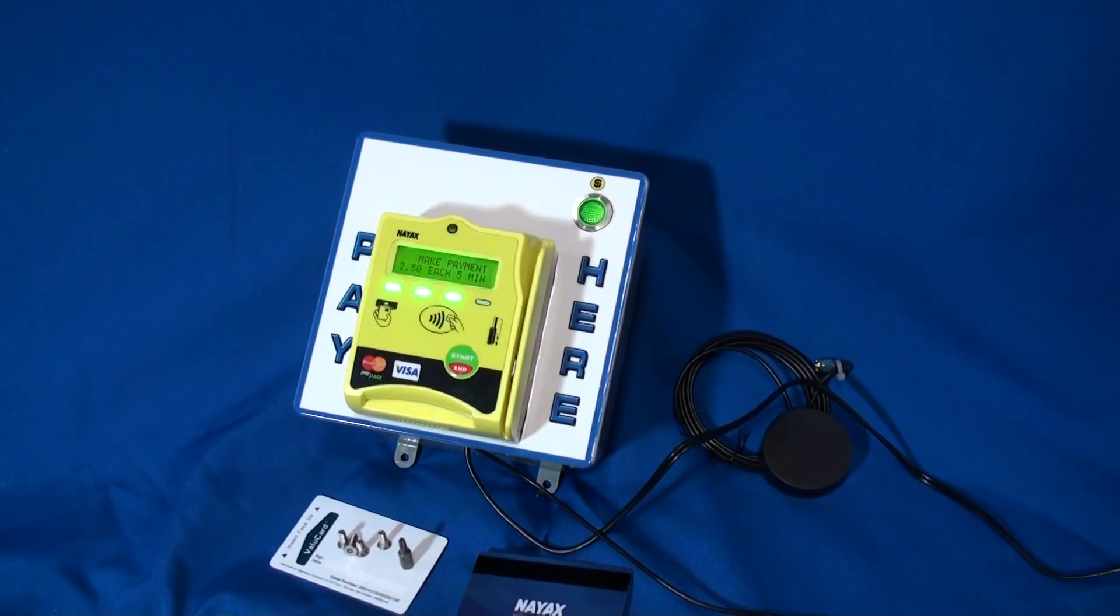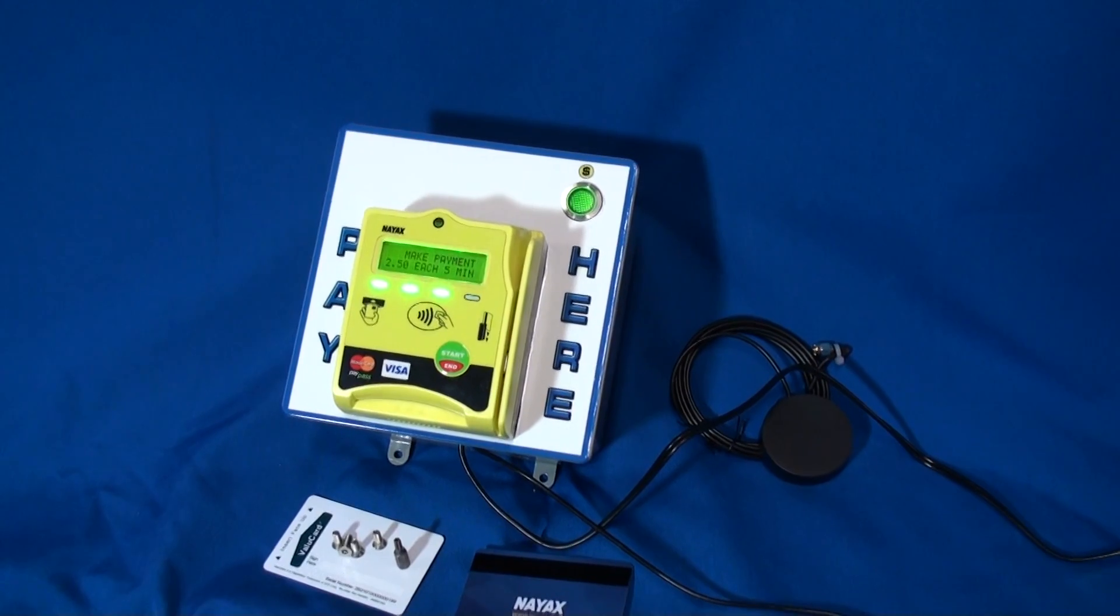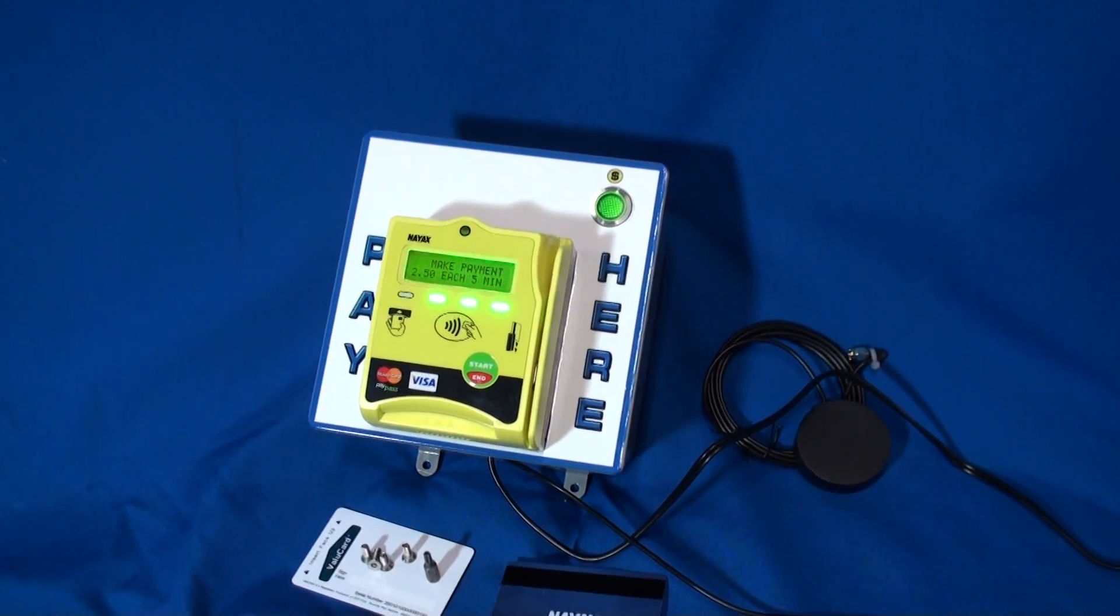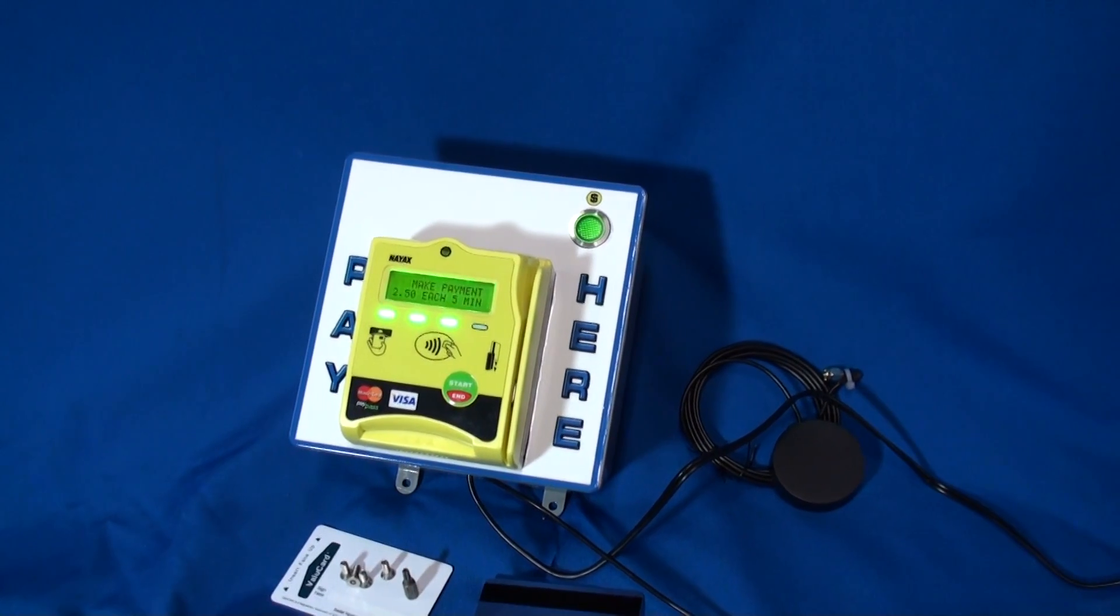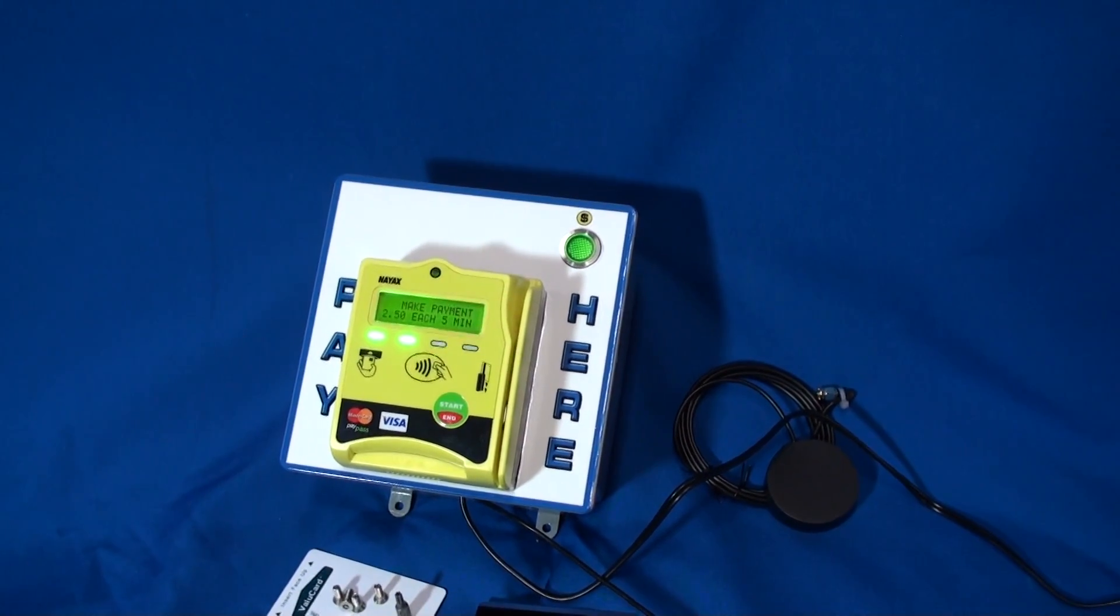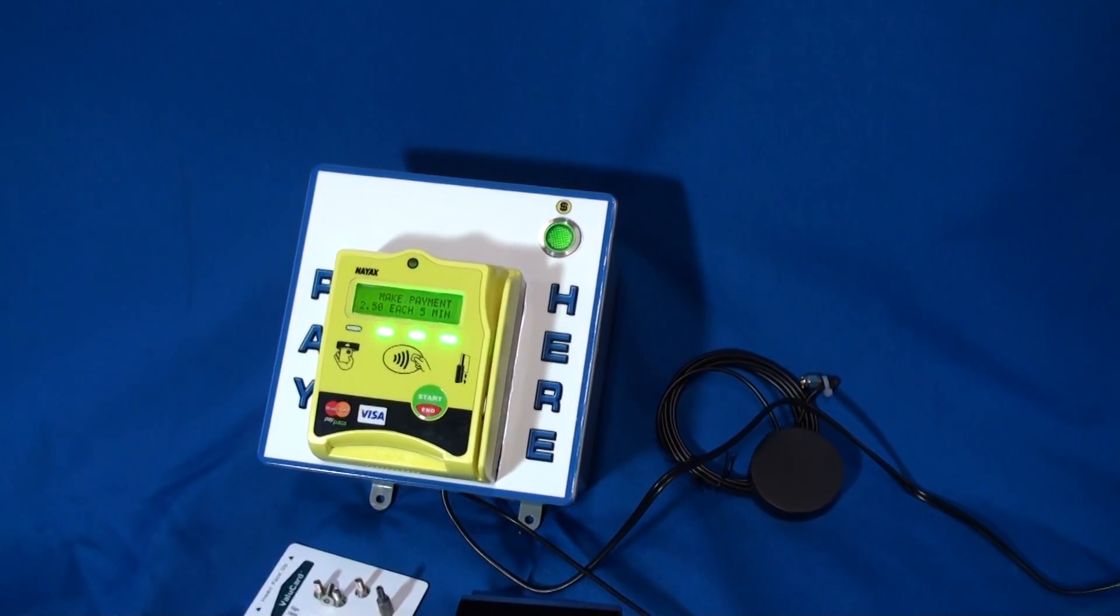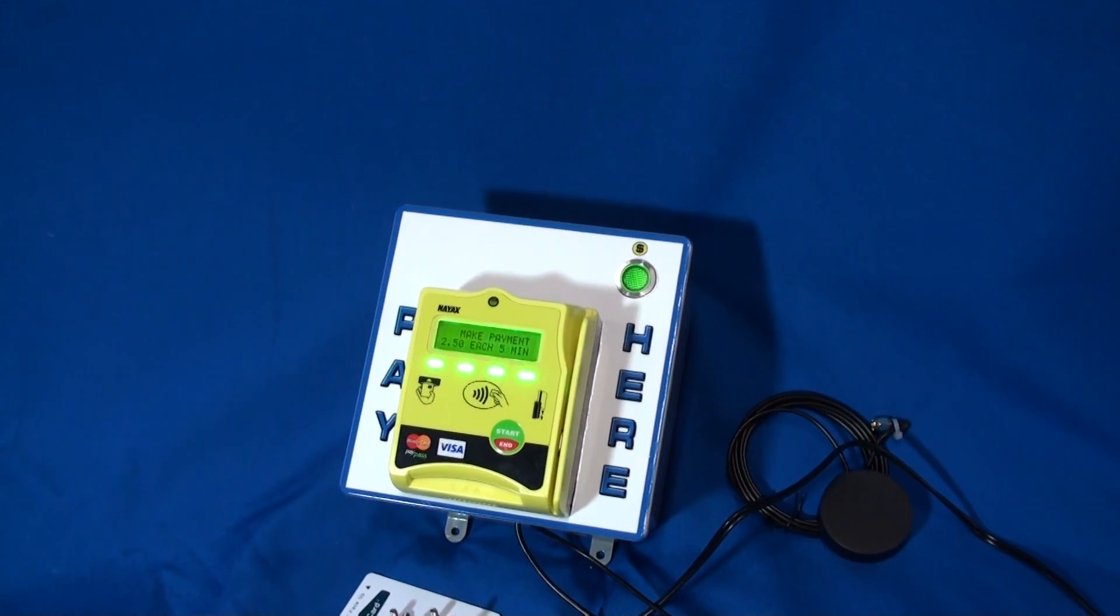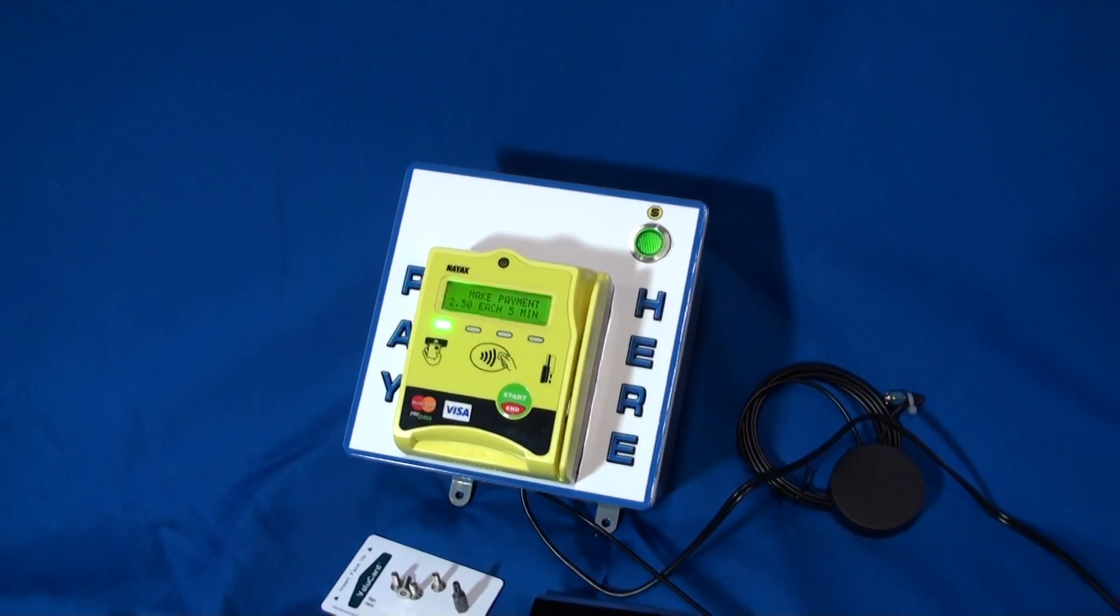This video is on a Model 6000 cashless payment system. You will see here the Nyax in pulse mode. We've set it for two dollars and fifty cents for each five minutes. It accepts all forms of payment, magnetic stripe and the older obsolete type mag card.